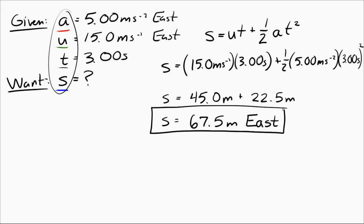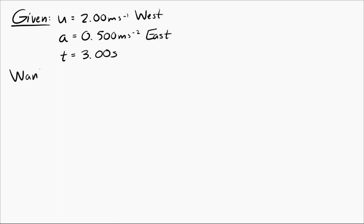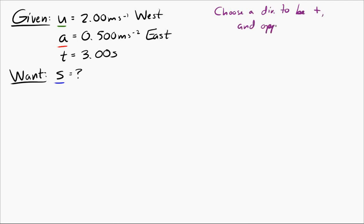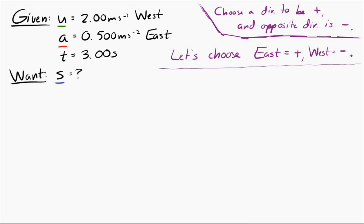Let's look at another example and see how to deal with direction in these equations. Say you have an initial velocity of two meters per second to the west, an acceleration of 0.5 meters per second squared to the east, for three seconds — what is the displacement? The key is to choose a direction to be positive; the opposite direction is negative. The most common convention is east positive, west negative. You could flip this, but we'll use the standard convention.